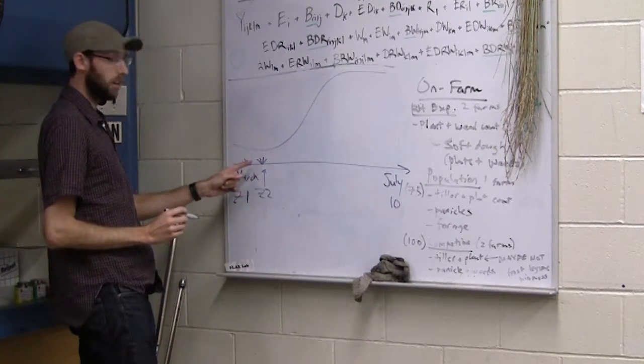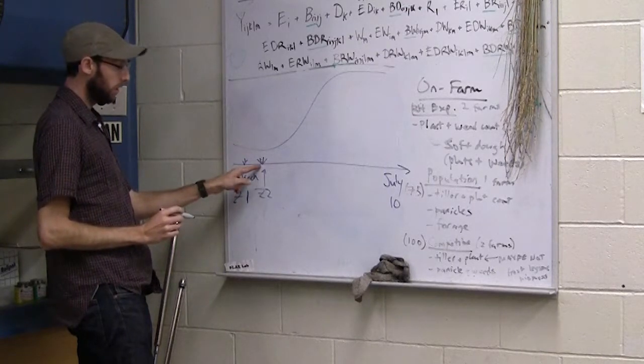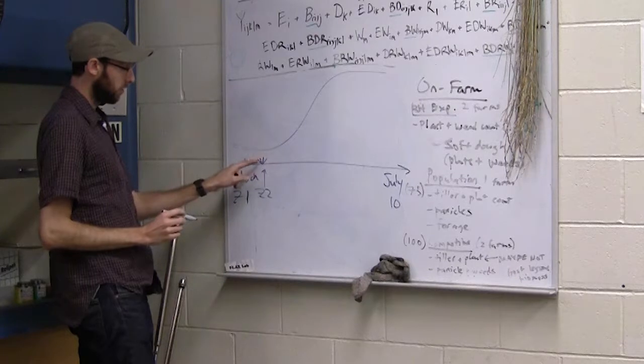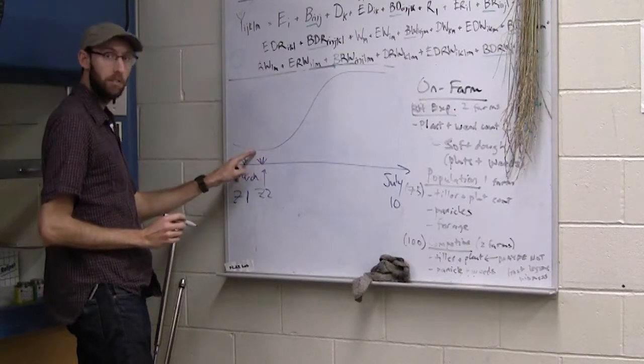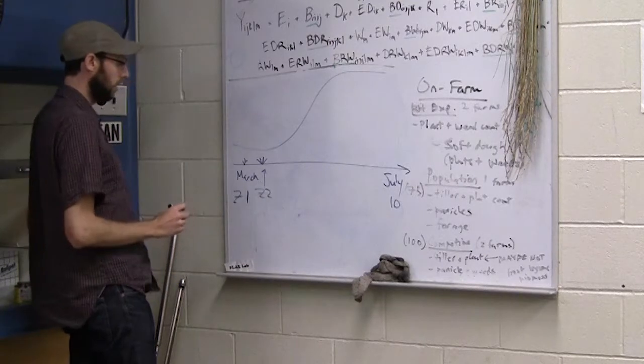Really early on at this stage, what you're determining with these tillers is how many seed heads you're going to have. And the amount of seed heads is going to determine your yield ceiling.